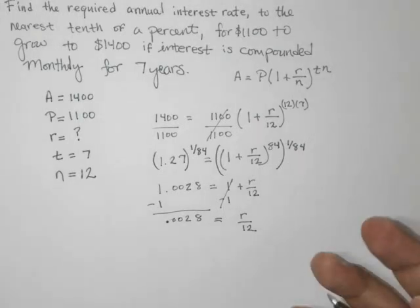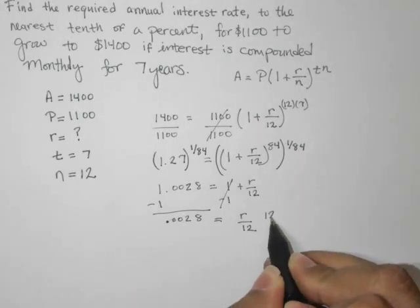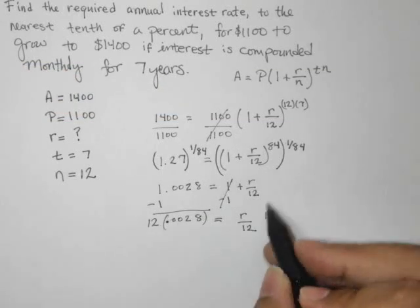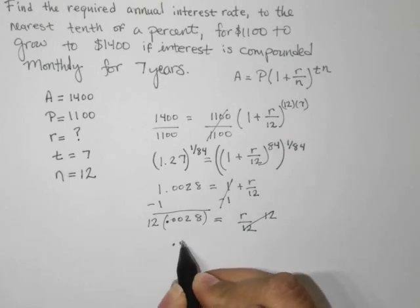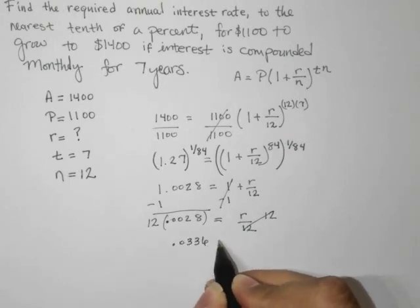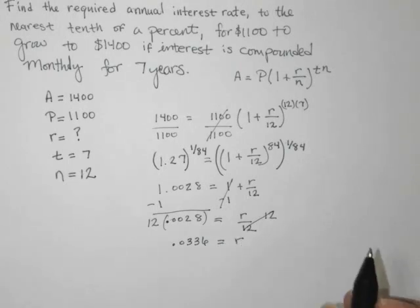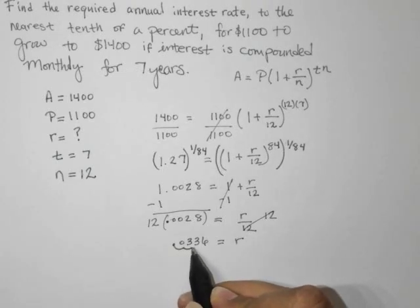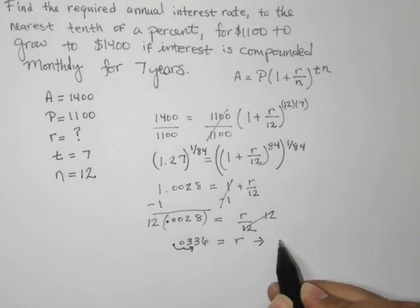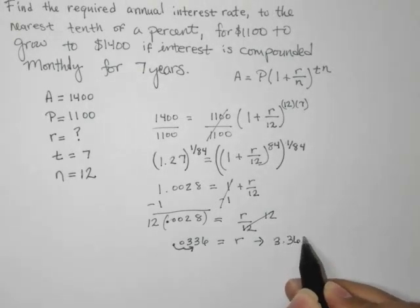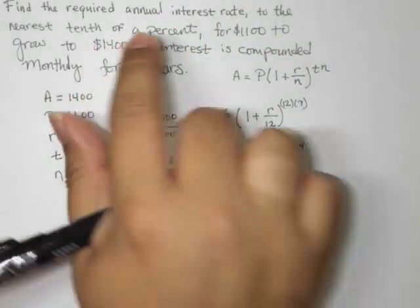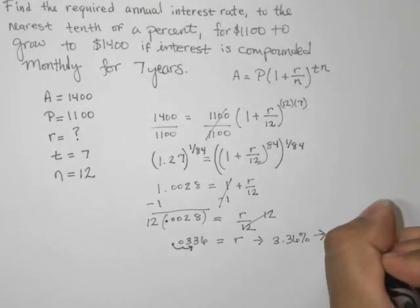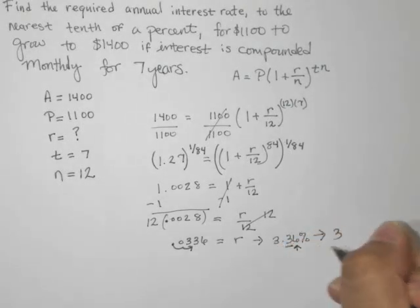Now how would we solve for R in this case, the very last step? Multiply both sides by 12. And in doing so here, we get something along the lines of 0.0336, which is R. And to get a percent, we would scoot this decimal place over twice, and we get something that looks like 3.36%. But they say they want it to the nearest tenth of a percent, so the actual rounded answer, this right here tells us to round up, is 3.4%. So this is our R, our interest rate R.